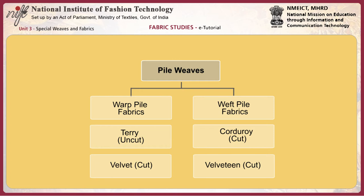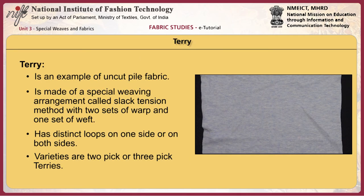Typical examples of pile weaves are terry cloth, velvet, corduroy, velveteen, etc. Terry is an example of uncut pile fabric. It is made of a special weaving arrangement called slack tension method, with two sets of warp and one set of weft. The extra warp forms loops on the fabric.